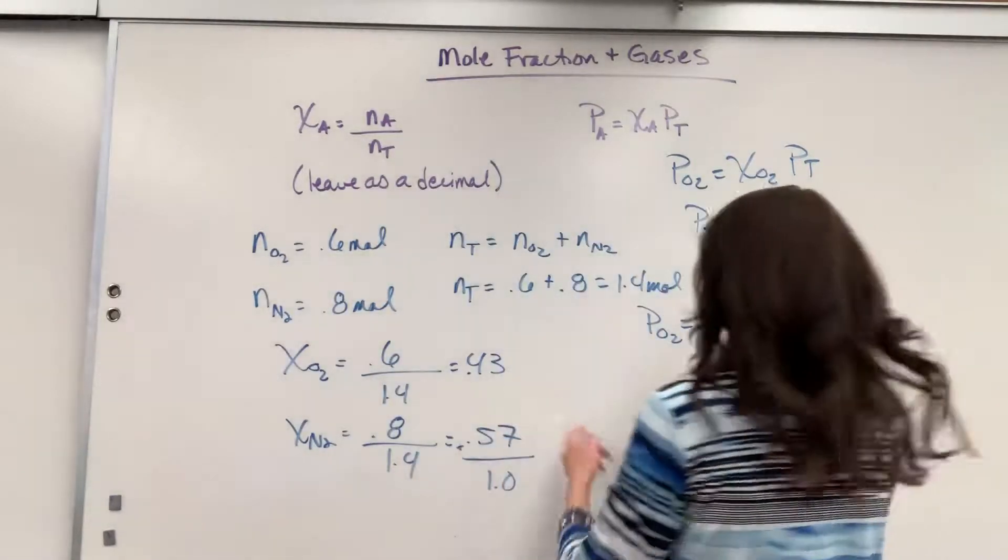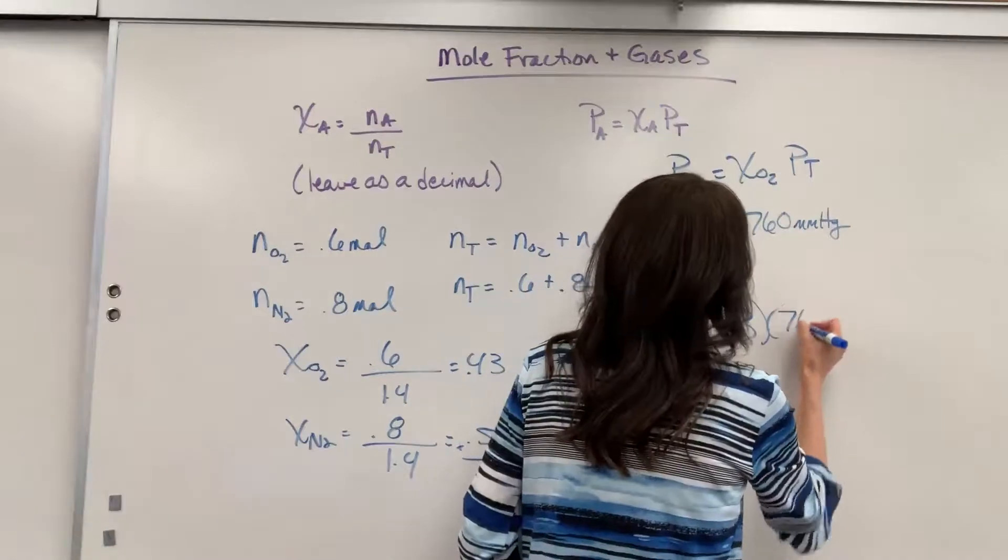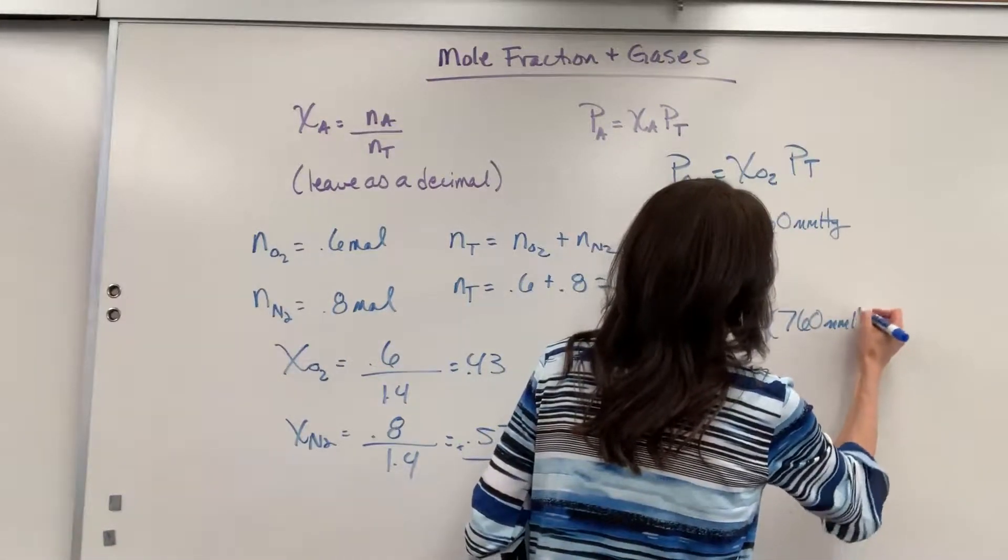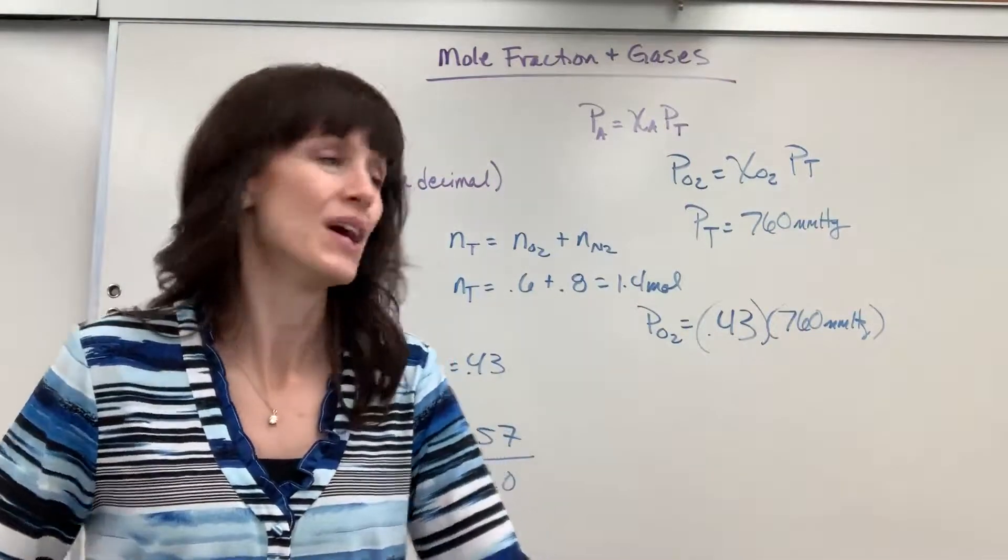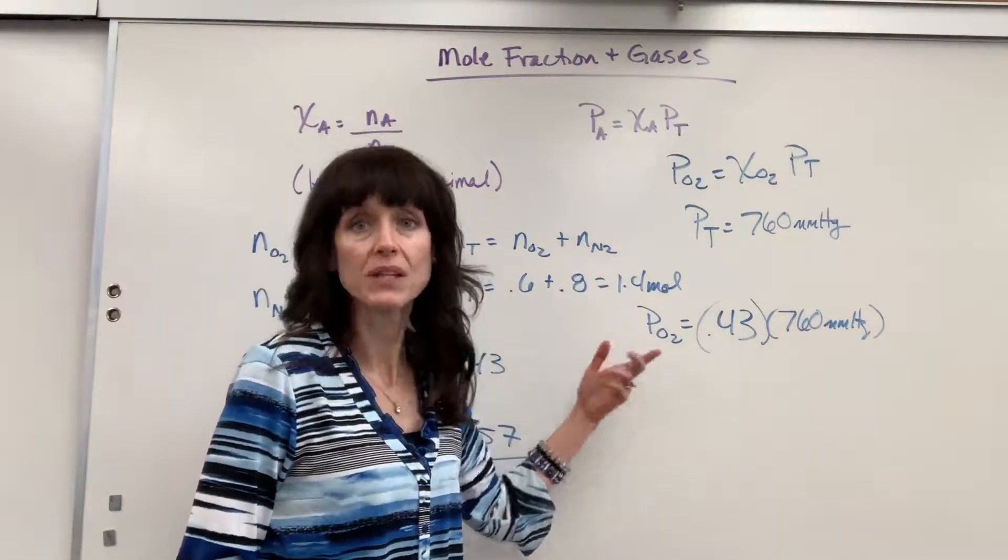So I can simply take the mole fraction, that's 0.3, here it is, for the oxygen, times 760 millimeters of mercury, and that's going to give me the amount of pressure contributed by the oxygen, its partial pressure.